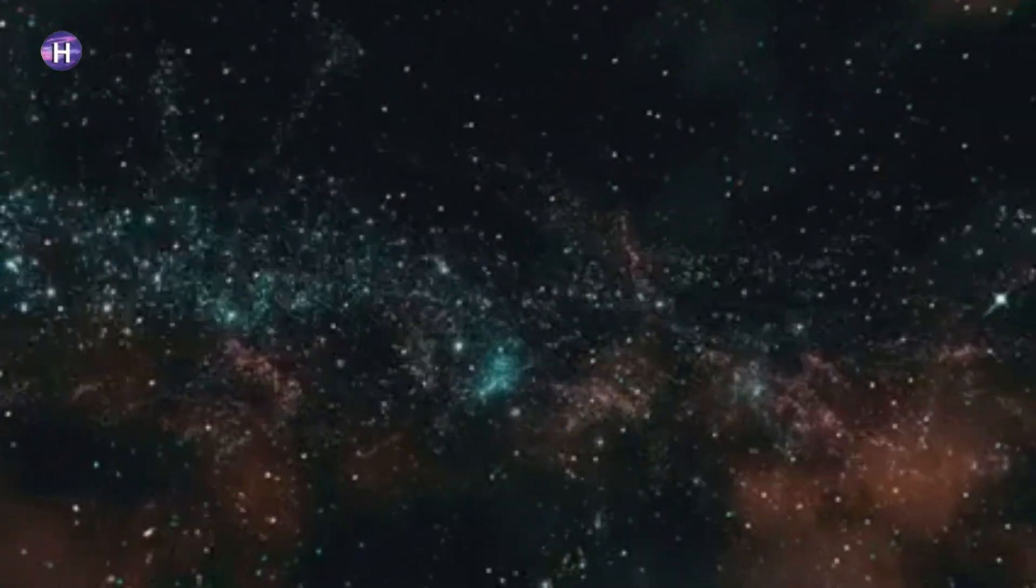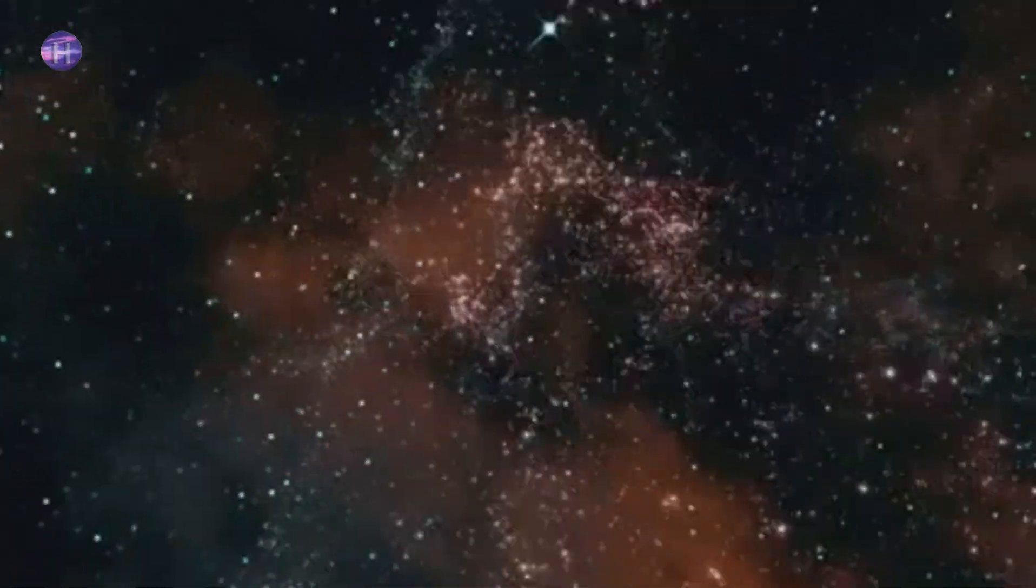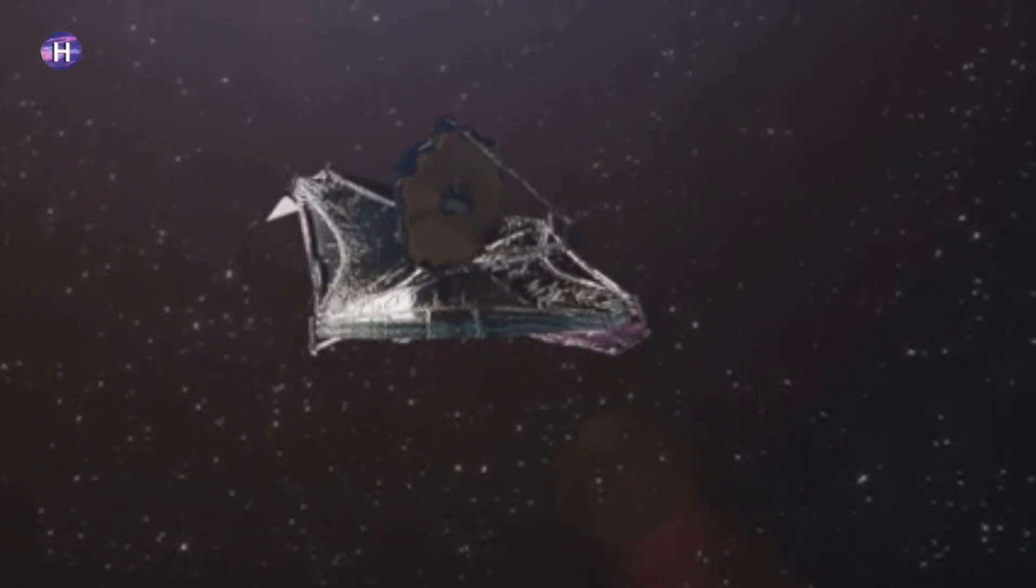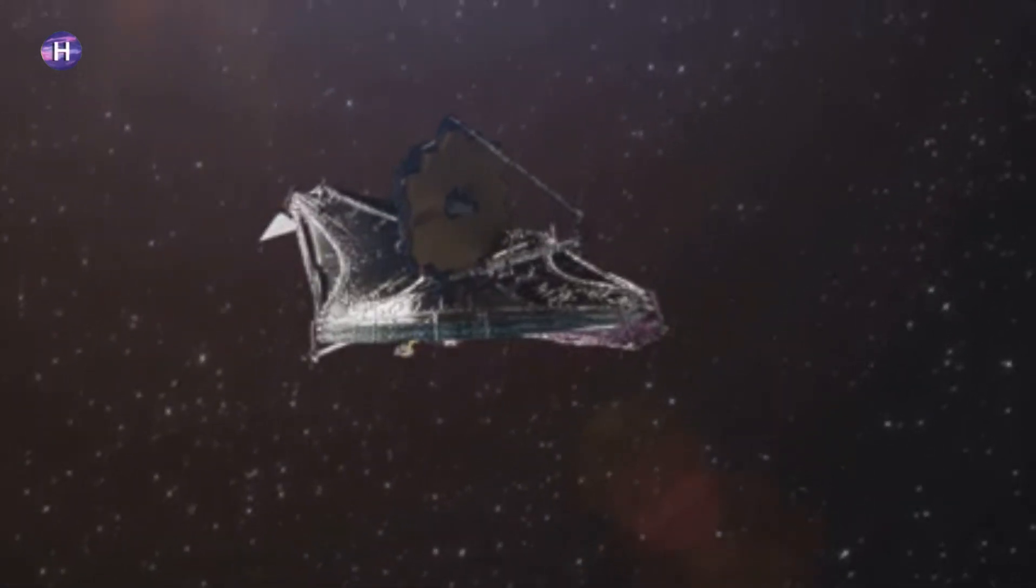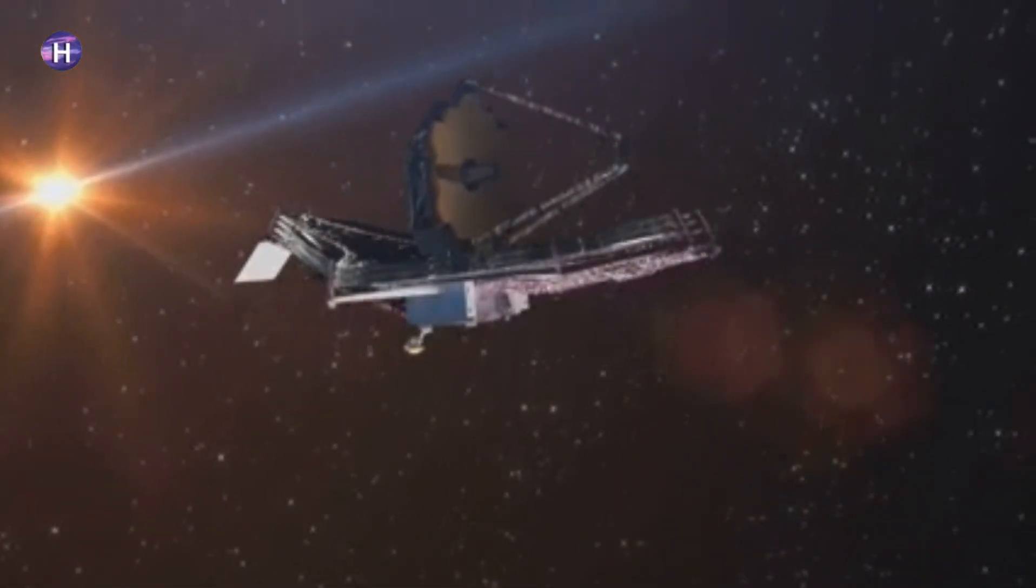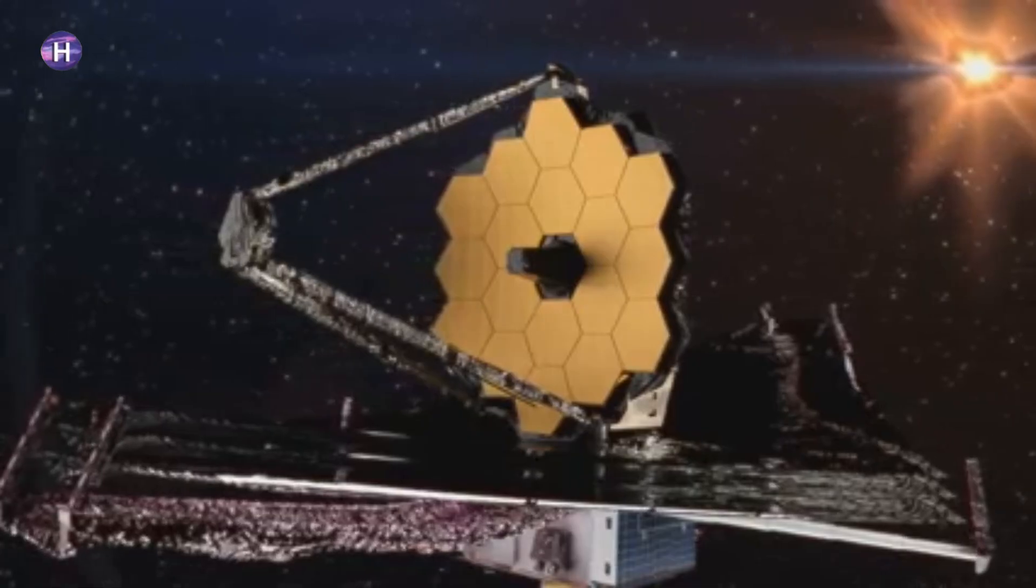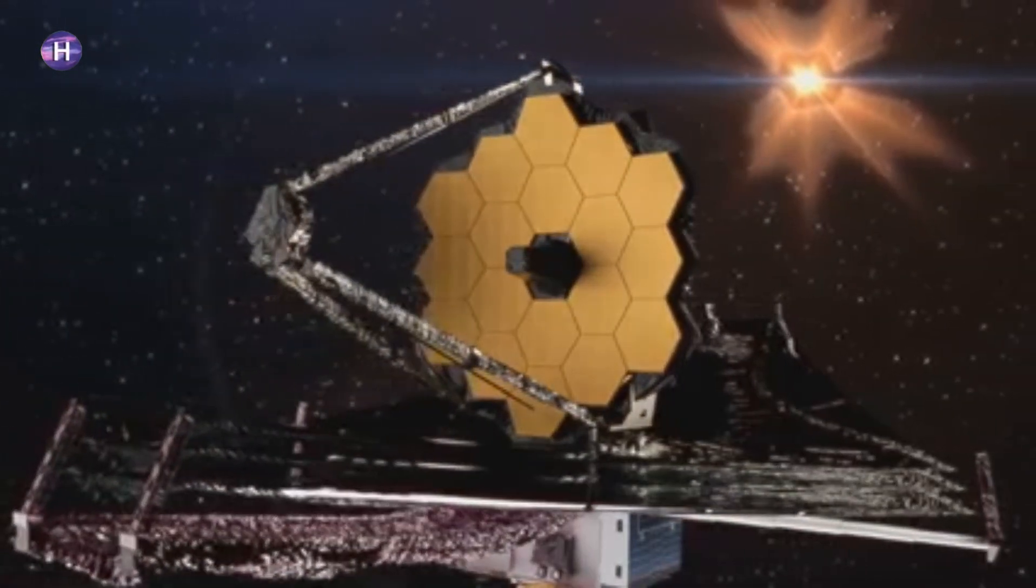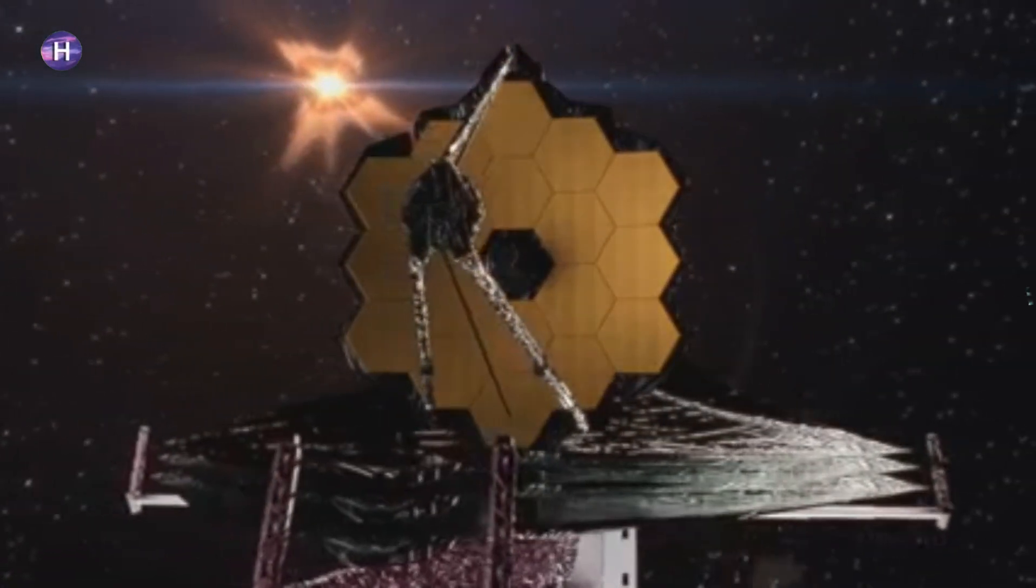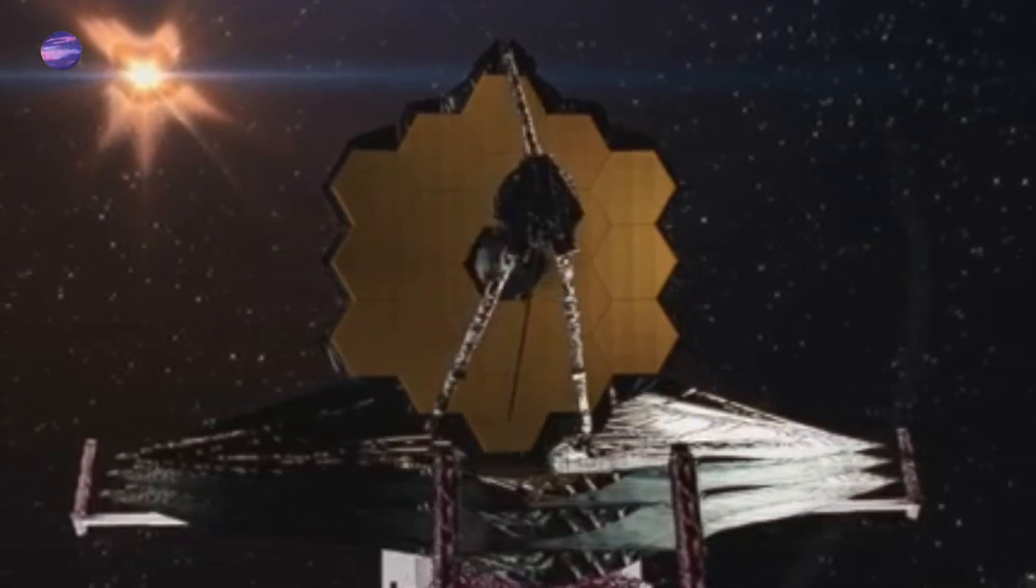This light has been traveling through space for billions of years. As it journeys across the vast expanse of the cosmos, it carries with it invaluable information about the conditions and events that shaped the early universe. The study of this light, known as cosmic archaeology, enables scientists to piece together the history of the cosmos, much like how archaeologists study ancient artifacts to understand human history.